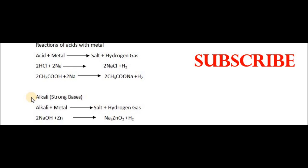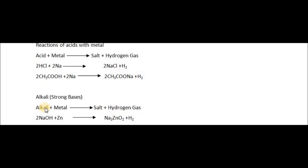Now consider the reactions of metals with strong bases. Strong bases are generally called alkalis. When alkalis react with metals, they give salt and hydrogen gas. For example, 2NaOH (sodium hydroxide) reacting with zinc forms sodium zincate (Na₂ZnO₂) and hydrogen gas is released. The hydrogen here comes from the alkali. So alkalis when reacted with metals give salt and hydrogen gas.